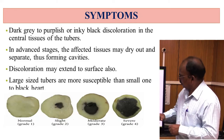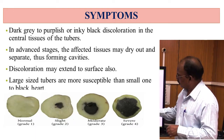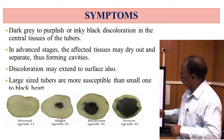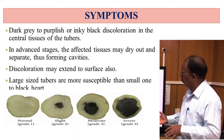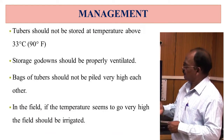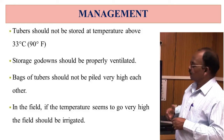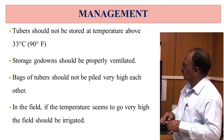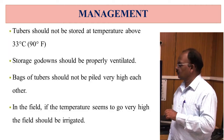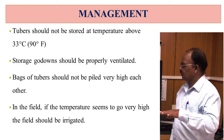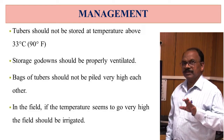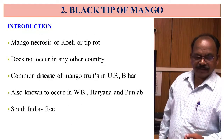Here you can see the color of the potato tubers slightly change and then turn black. For management, tubers should not be stored at temperatures above 33 degrees Celsius. The storage godown should be properly ventilated and bags of tubers should not be piled very high. In the field, if the temperature goes very high, the field should be irrigated.